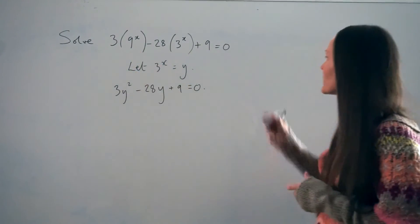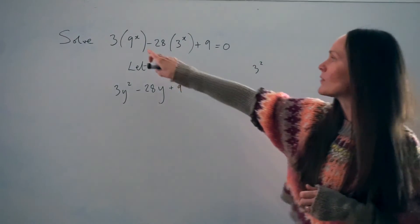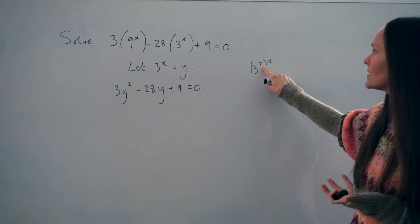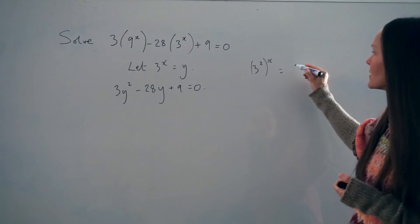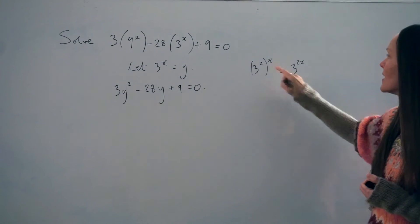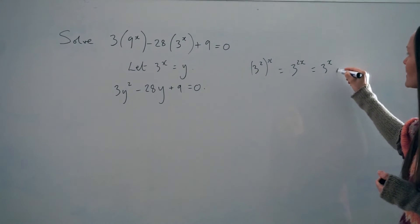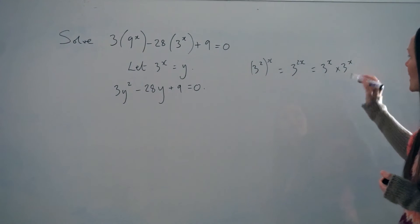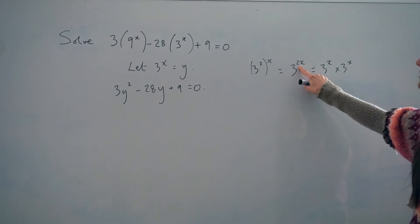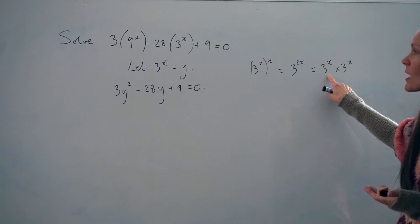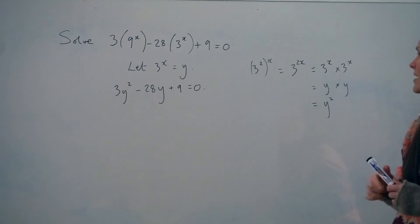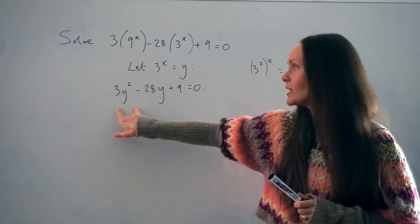If I rewrite the number 9 as 3 squared, then instead of 9 to the power of x, I have 3 squared to the power of x, because 3 squared is 9 — I'm just rewriting it as a power of 3. This can also be written as 3 to the power of 2x, because when there are brackets you multiply the powers together. This is the same as 3 to the power of x times 3 to the power of x, because multiplying two numbers that are the same means you add the powers, which gives the 2x. And since the substitution is 3 to the power of x equals y, this becomes y times y, which is y squared. That's why the beginning of the equation becomes 3y squared.